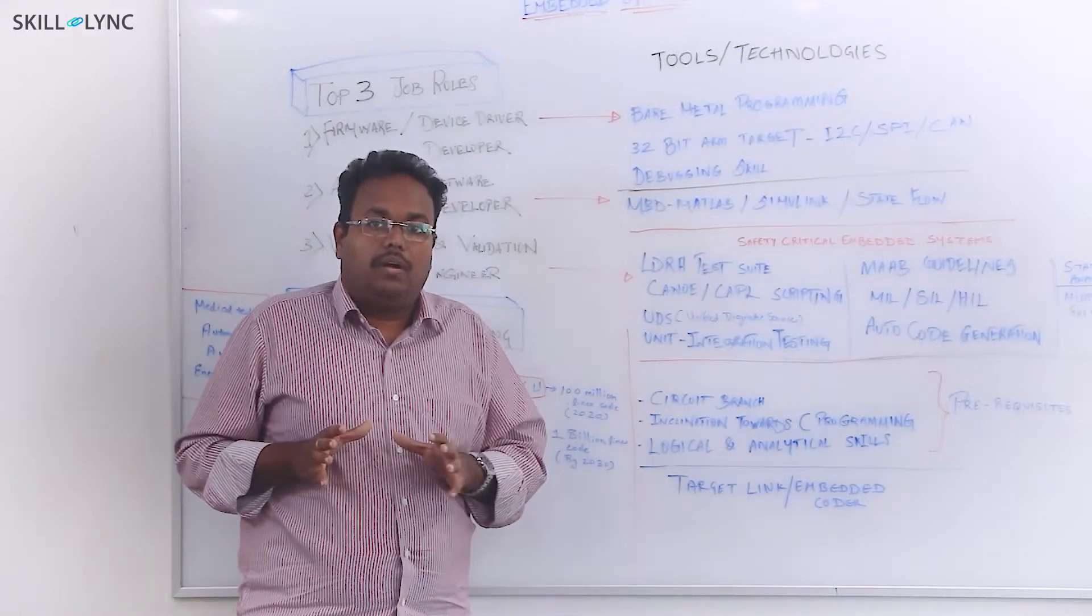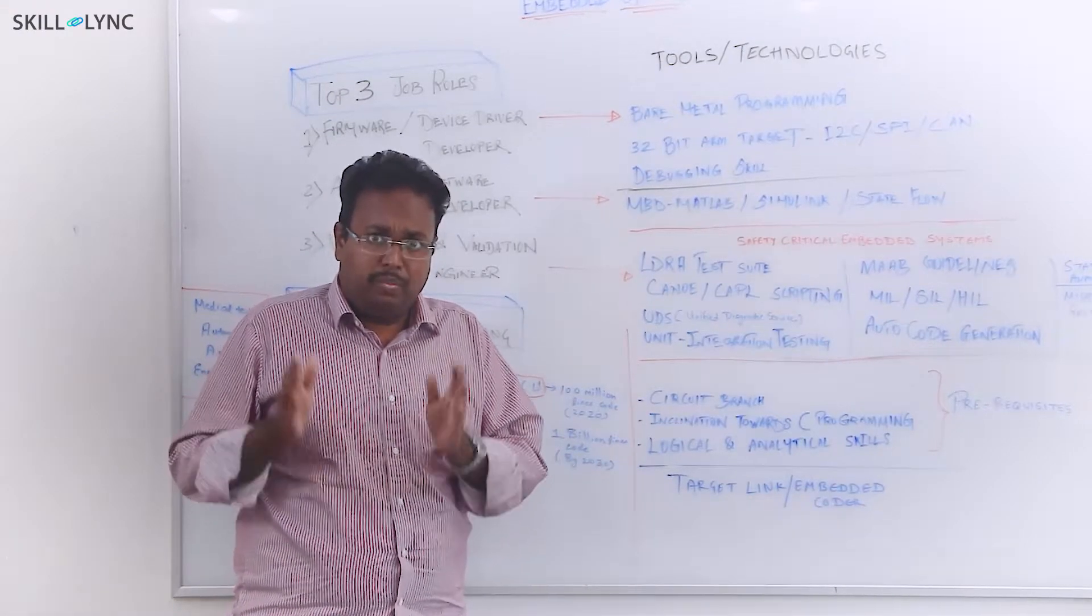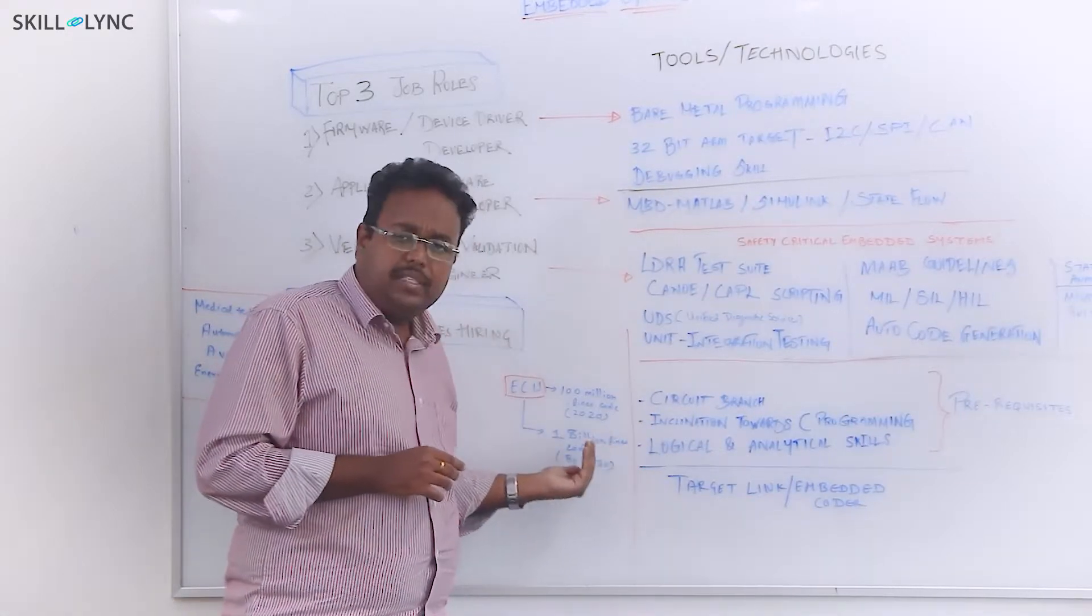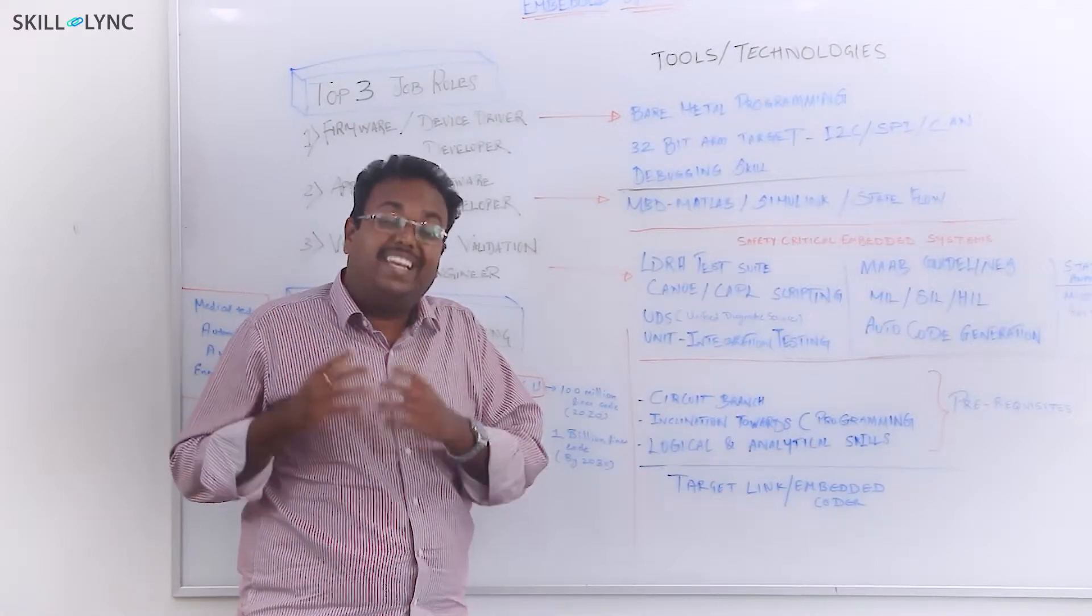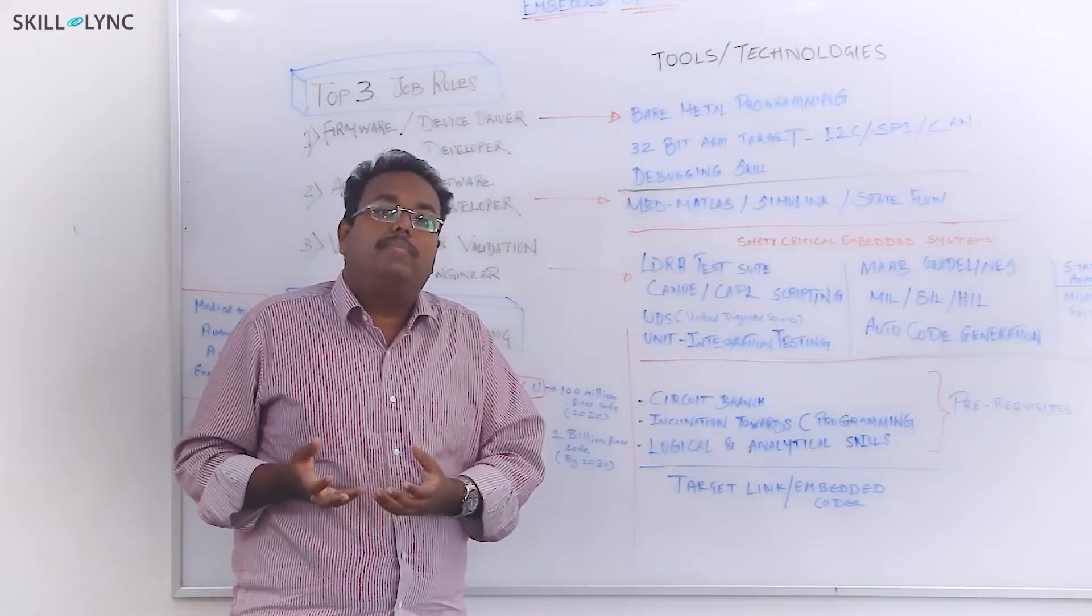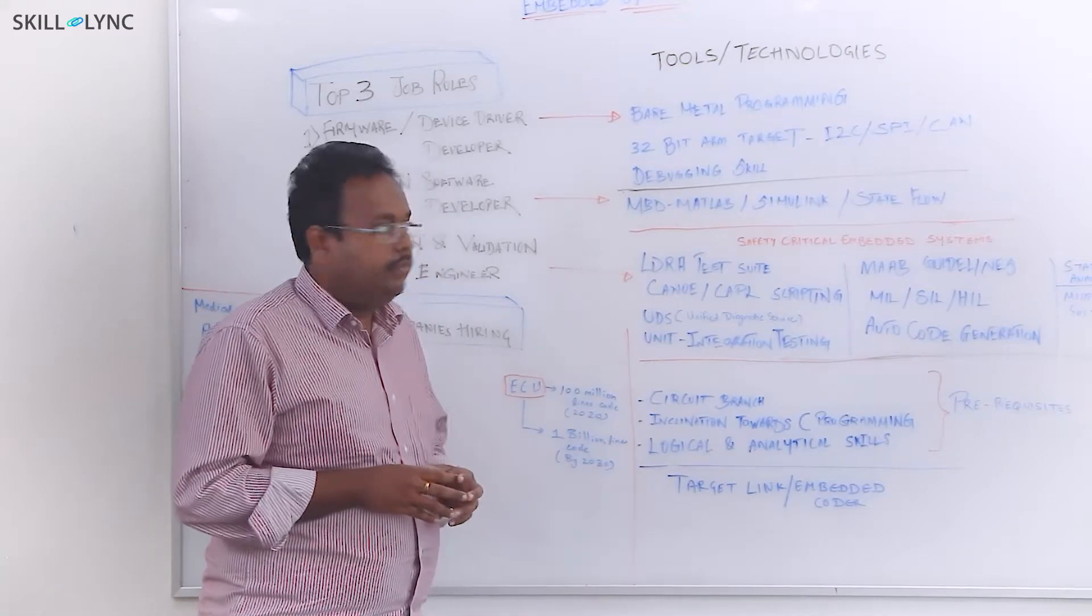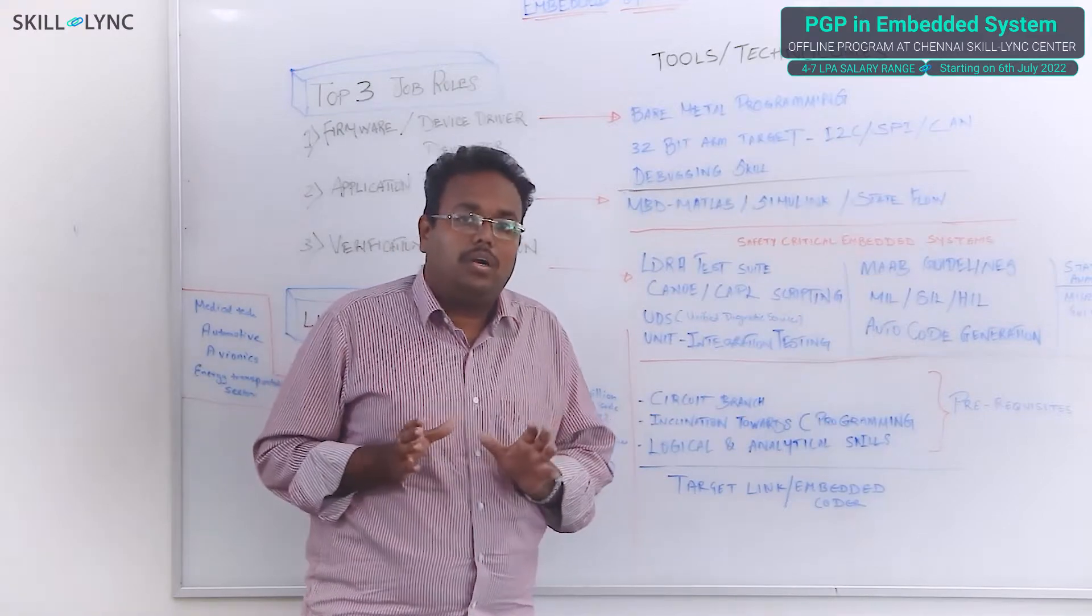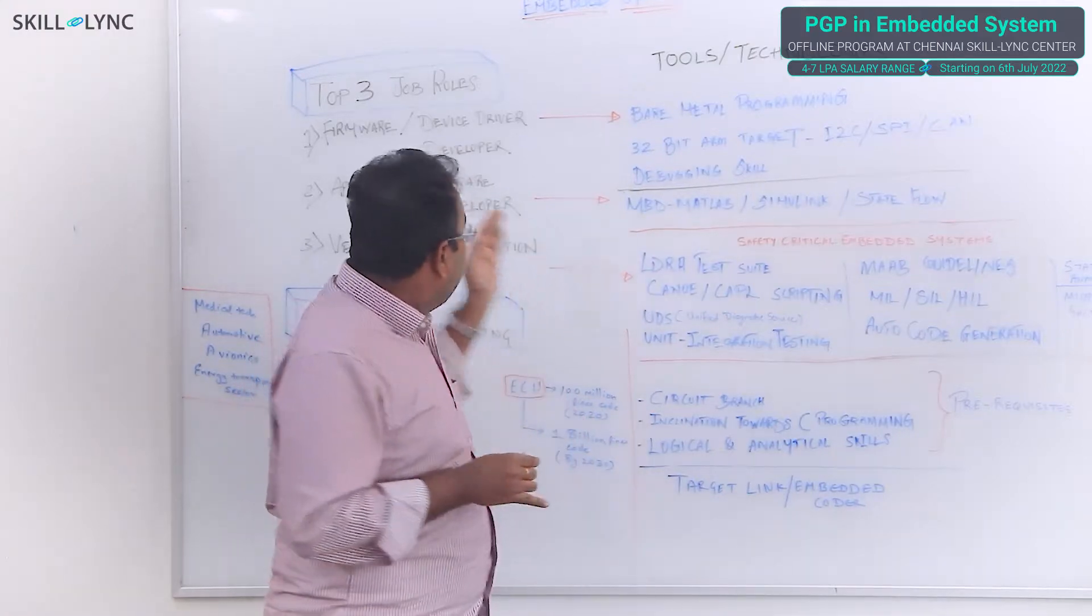The biggest motivation is we want 1 billion lines of code to be developed, to be verified and to be validated, which requires enormous amount of workforce or skilled workforce who can take up this job and implement and industrialize and make this happen somewhere by end of 2030. This is about the motivation. Now, let's have a detailed look on what are different tools and technologies that you want to learn to get into each of these job titles.